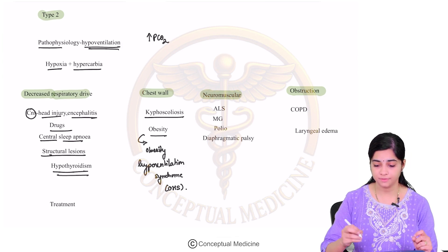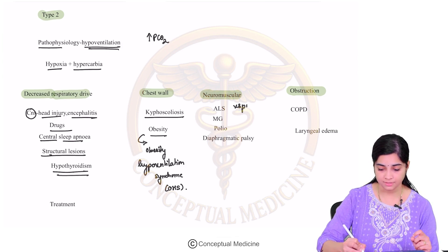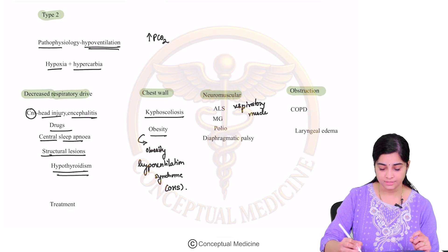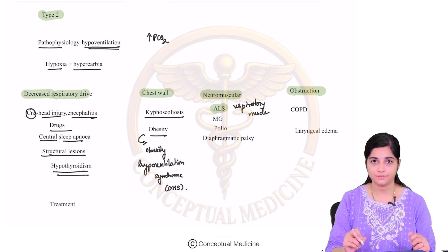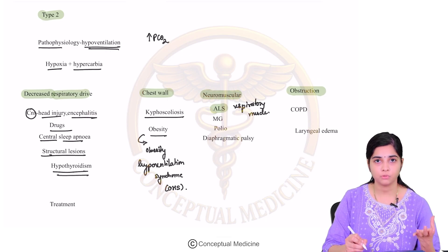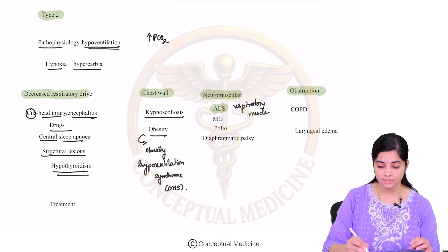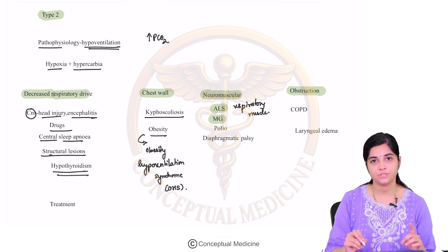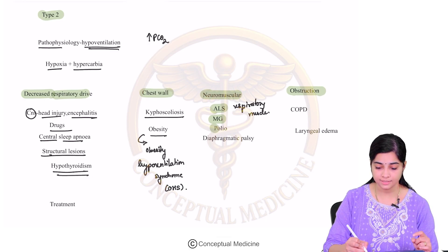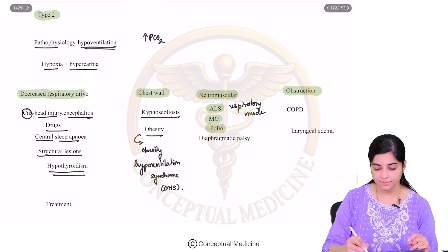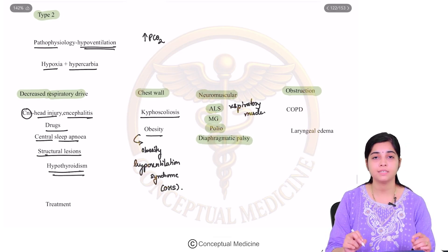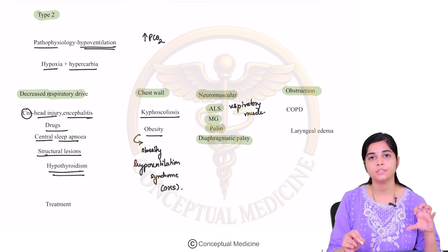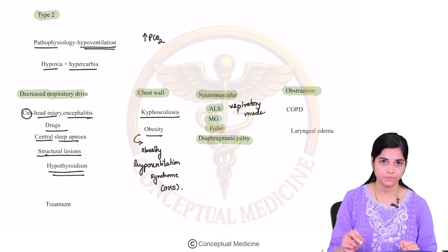Neuromuscular disorders causing respiratory muscle weakness — for example ALS (amyotrophic lateral sclerosis, a motor neuron disease), myasthenia gravis especially in generalized myasthenia or myasthenic crisis, polio, and diaphragmatic palsy — all of these can cause weakening of the respiratory muscles and PCO2 retention.